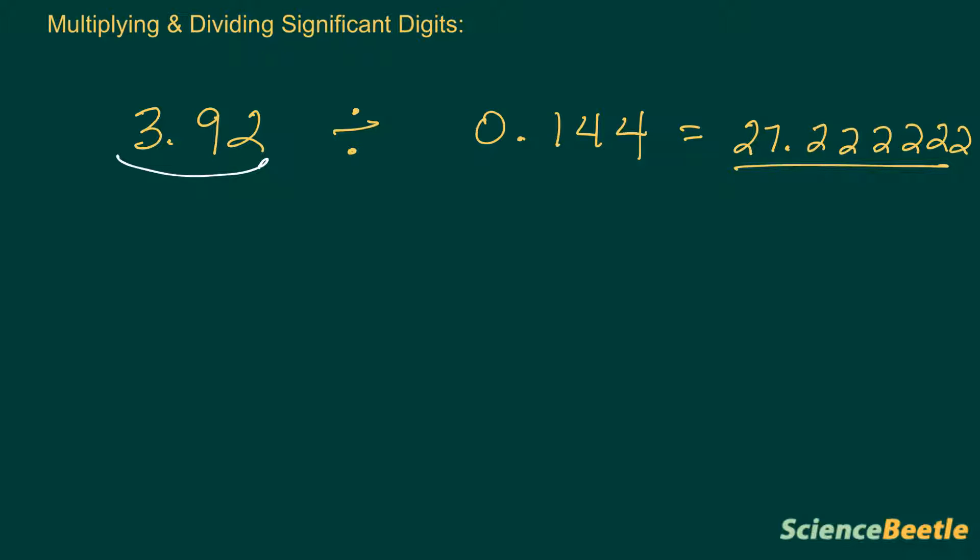We've got to go back to the original numbers provided in the problem and count them. If we look at this number, we see the total number of significant figures is 3: the 3, the 9, and the 2. Let's look at the other number provided in the problem.